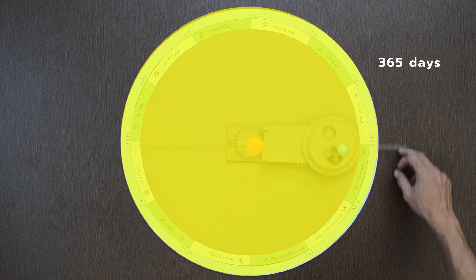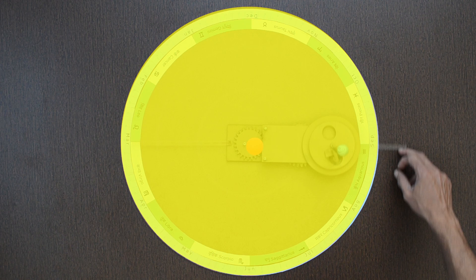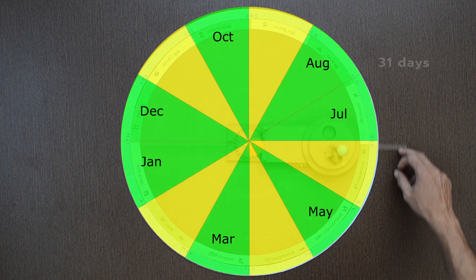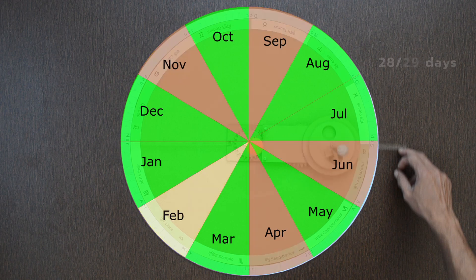Earth takes 365 days to complete one revolution around the Sun. These are divided into 12 parts. Each part is called one month. Some months have 31 days, while some have 30, except February, which has 28 or 29 days.